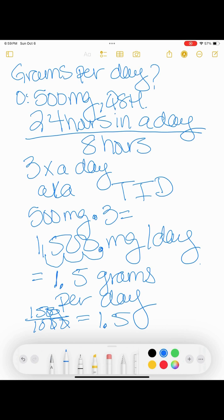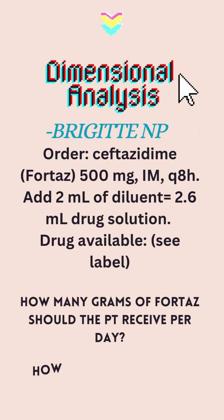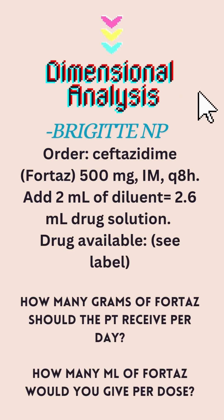And now we will move on to the second part of the question. So here it is again. The second part of the question is how many milliliters of Fortaz would you give per dose? So we're adding two milliliters of the diluent, which will equal 2.6 milliliters of the drug solution.